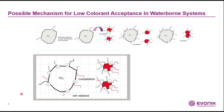What the compatibilizer does is that when you add it to the base paint, it covers the titanium dioxide particles better than before, so it already covers the surface area of the titanium dioxide that would otherwise attract the additive from the organic pigment in the colorant. After tinting, it will also be on the surface of the color pigments, and in the end everything is well stabilized and you do not see a high rub-out anymore.